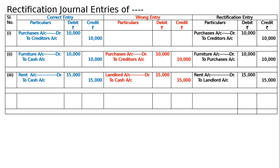The fourth error: old machine sold for 5,000 was credited to sales account. The correct entry is cash account debited to machinery account 5,000. This machinery sale is not an ordinary sale of the business — the company does not deal in machines in the usual course of business. By mistake, the wrong entry was cash account debited to sales account 5,000. In the credit there should be machinery account, not sales account.